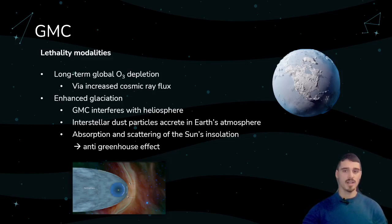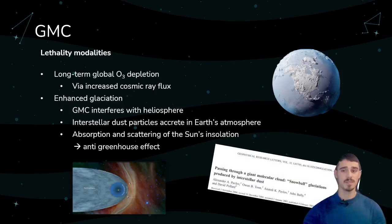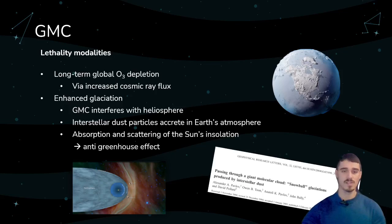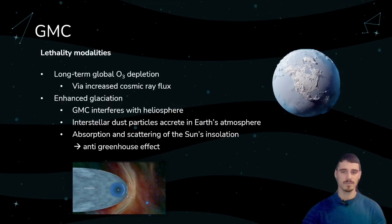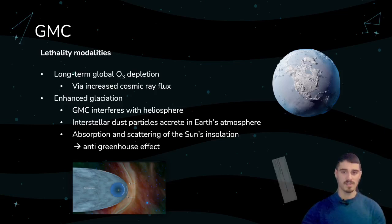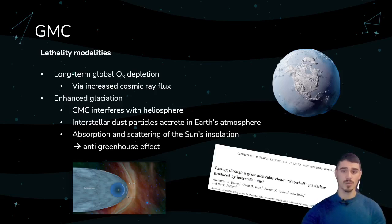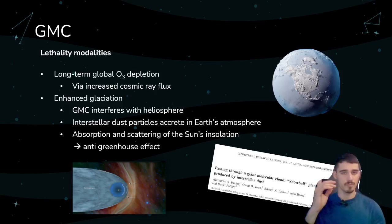Just like gamma-ray bursts, giant molecular clouds can interfere with the ozone layer via increased cosmic ray flux. However, the primary lethality mechanism is called enhanced glaciation, as described in Pavlov et al. Our Sun creates a protective bubble called the heliosphere surrounding the solar system. Giant molecular clouds can interfere with the heliosphere, reducing it or even collapsing it. The collapse enables interstellar dust particles to reach and accrete in Earth's atmosphere, absorbing and scattering the Sun's insolation, leading to an anti-greenhouse effect. The planetary surface starts cooling, which can lead to glaciation of the whole surface — the resulting product is called Snowball Earth.